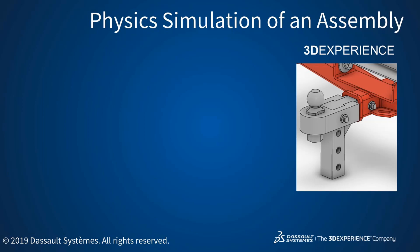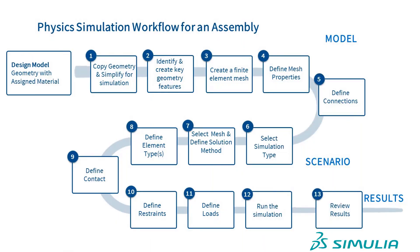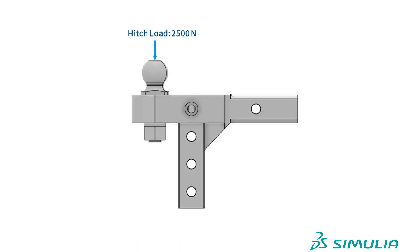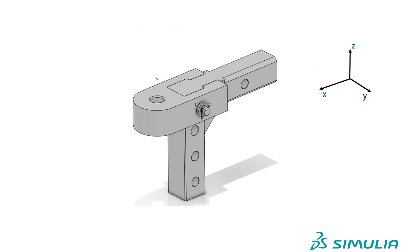This video will demonstrate how to perform a structural simulation on an assembly in 3D Experience. We will track our progress using the assembly workflow diagram. We use the same trailer hitch model used in the previous videos. The trailer hitch is supposed to support a hitch load of 2500 newtons and a pull load of 26 kilonewtons. For this model, we only simulate the adjustment bar, lug, and lock pin.